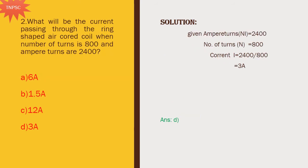Next problem: what will be the current passing through a ring-shaped air core coil when the number of turns is 800 and ampere-turns are 2400? Ampere-turns means N times I equals 2400. Number of turns N is equal to 800. So I is equal to 2400 divided by 800, which is equal to 3 ampere. We just have to understand the question clearly. Option D is the right answer.